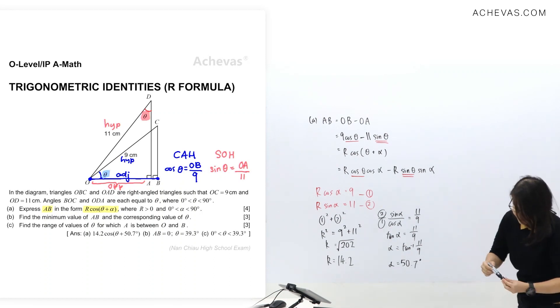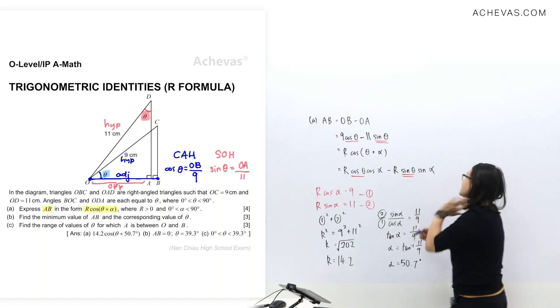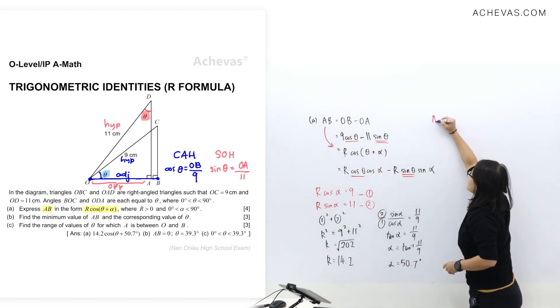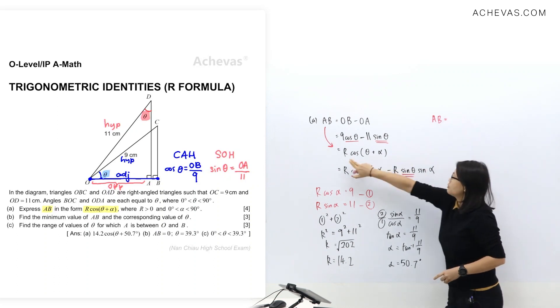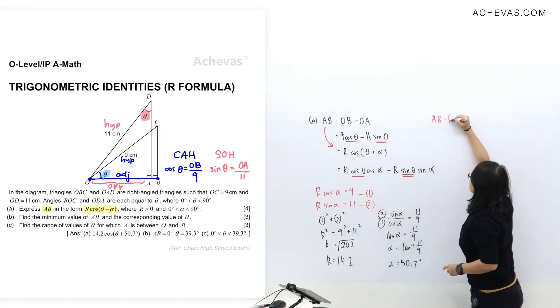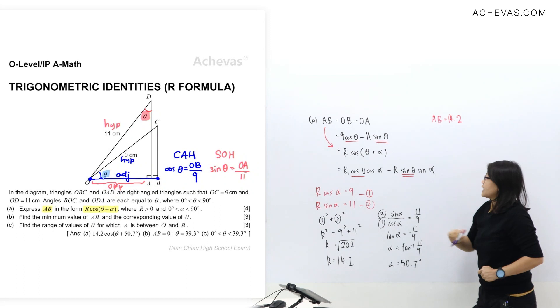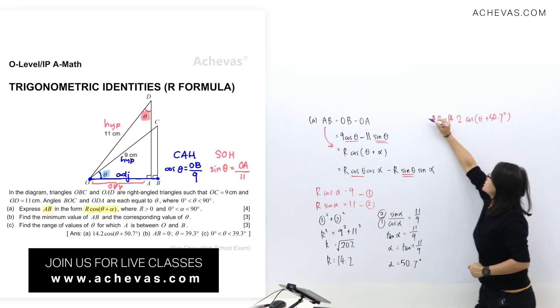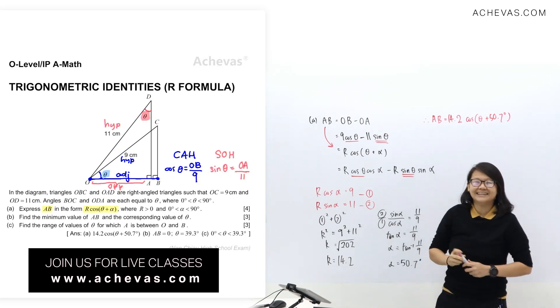Now we are ready to express AB in this form here. So let's rewrite this one here. AB equals to, replace R with 14.2, and cos theta plus alpha. Cos theta and alpha replace with 50.7 degrees. So this is the answer for part A.